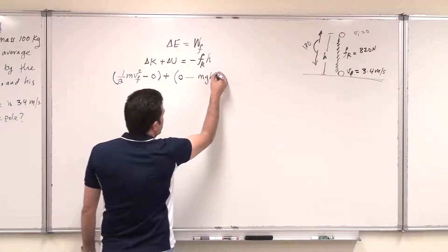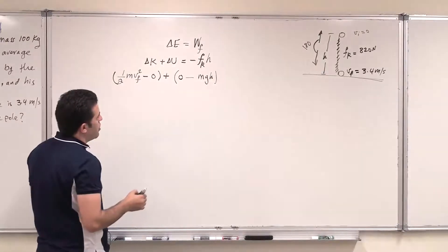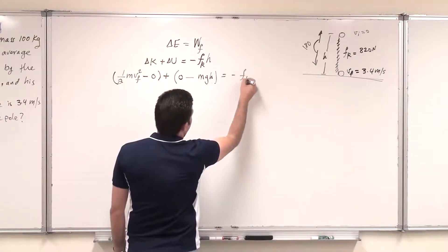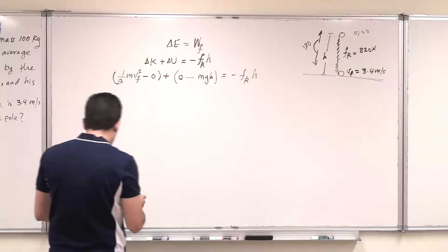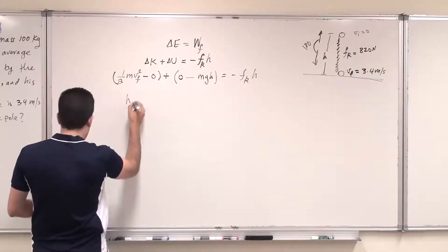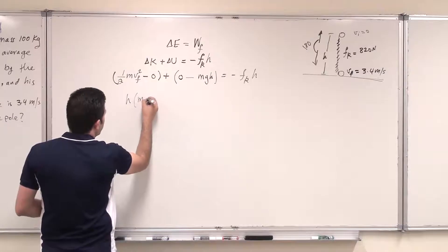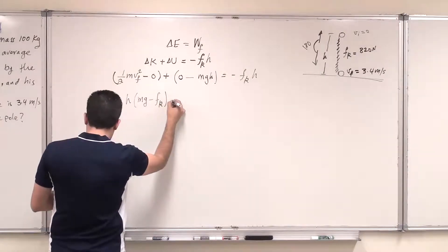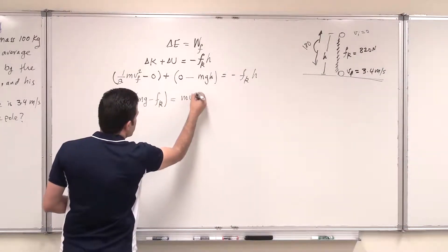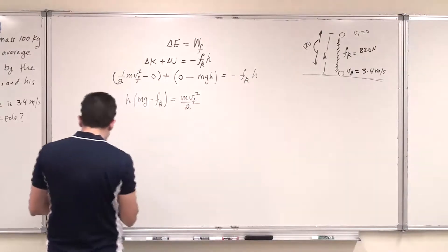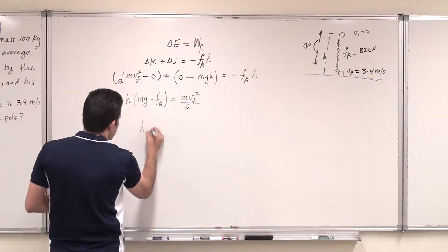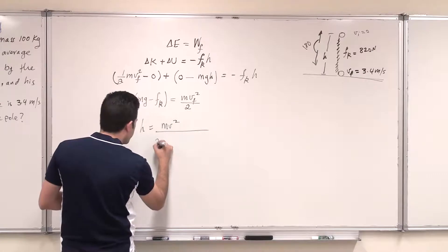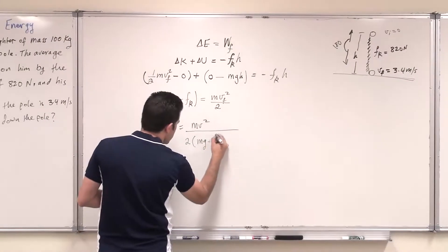should equal minus f_k h. Then basically I can arrange this equation, say that h times mg minus f_k force of friction should equal m v final squared divided by 2. And as a result, I can arrange h as m v squared divided by 2 times mg minus f_k.